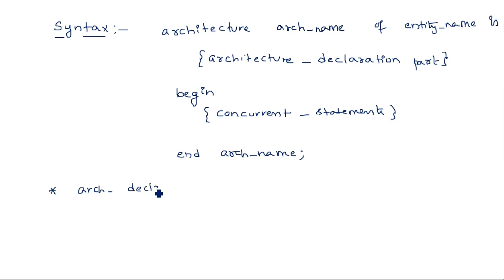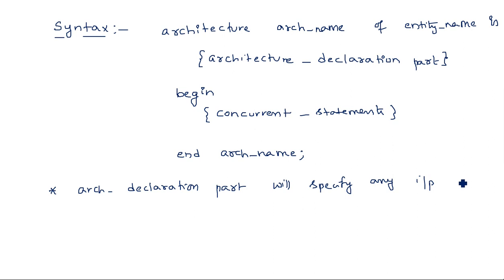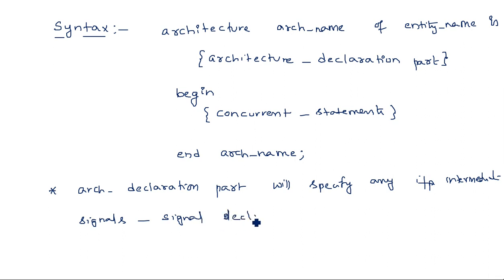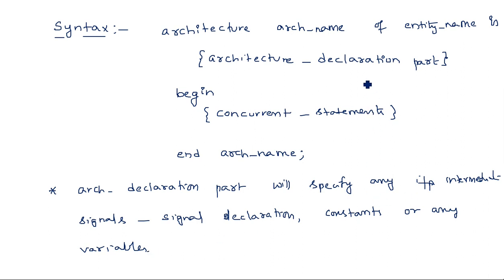The architecture declaration part specifies any intermediate signal declarations, constant declarations, or variable declarations. So signal declarations, constants, or variables — all such declarations are done here between 'architecture...is' and 'begin'.